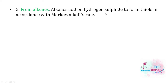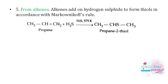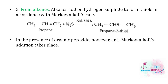Fifth method: from alkenes. Alkenes are treated with hydrogen sulfide to form thiols according to Markovnikov's rule — the negative part (sulfur) goes to the carbon that has fewer hydrogen atoms. For example, with propene and H₂S, sulfur attaches to the carbon with one hydrogen (less hydrogen), giving propane-2-thiol. If an organic peroxide catalyst is used (anti-Markovnikov), the negative part goes to the carbon with more hydrogens, so sulfur attaches to the first carbon, giving the terminal thiol.